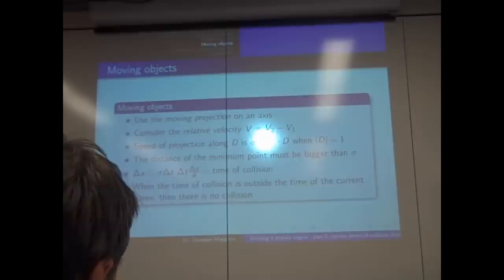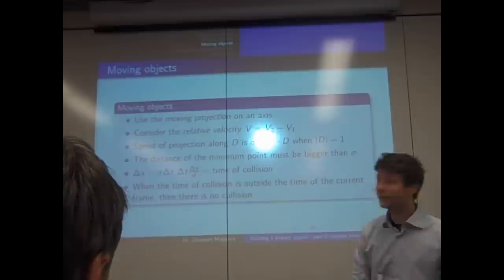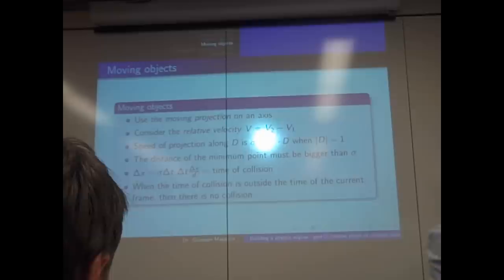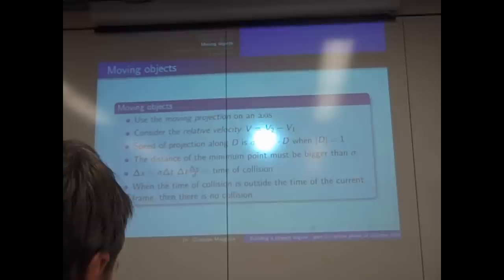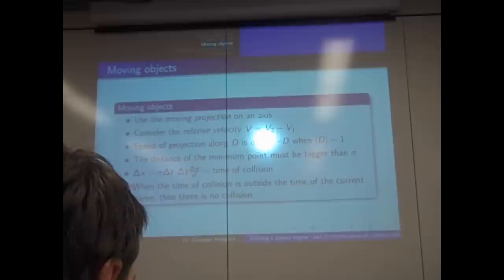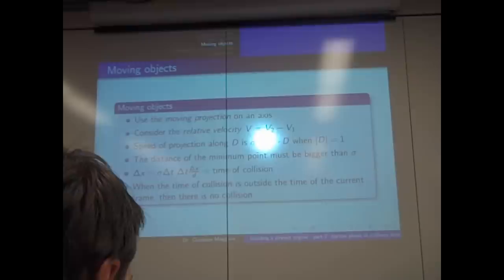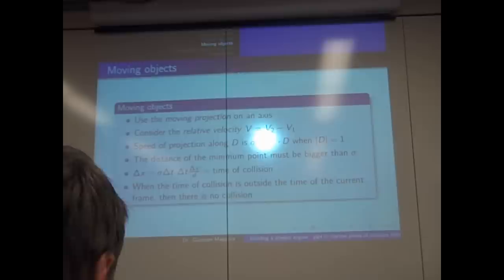We use the relative velocity V and a potential separating direction D. The quantity sigma = V dot D is the component of the relative velocity along the separating axis — how fast the bodies are approaching along that direction. For sigma to correctly represent the velocity along the axis, the separating direction D must be normalized.